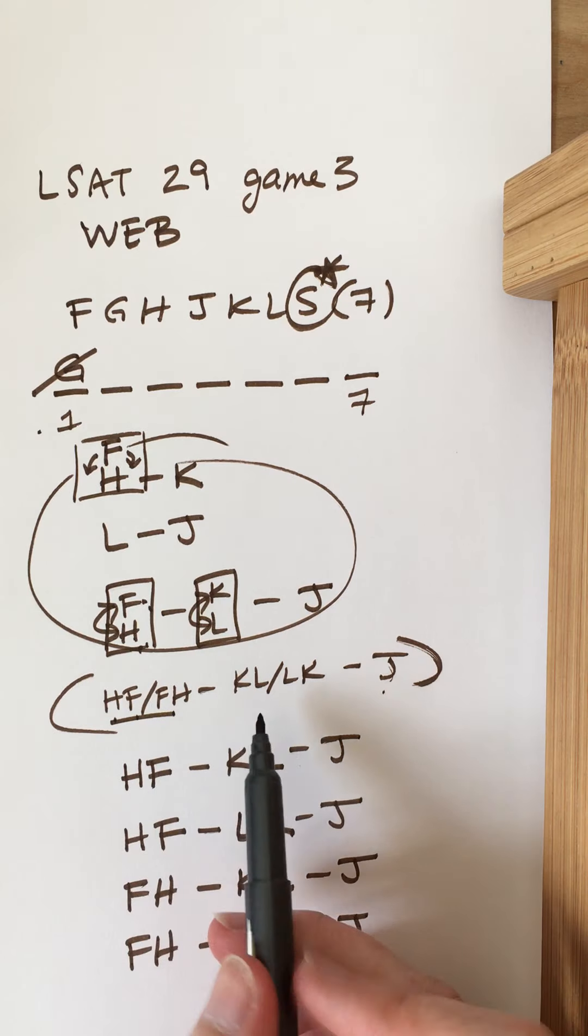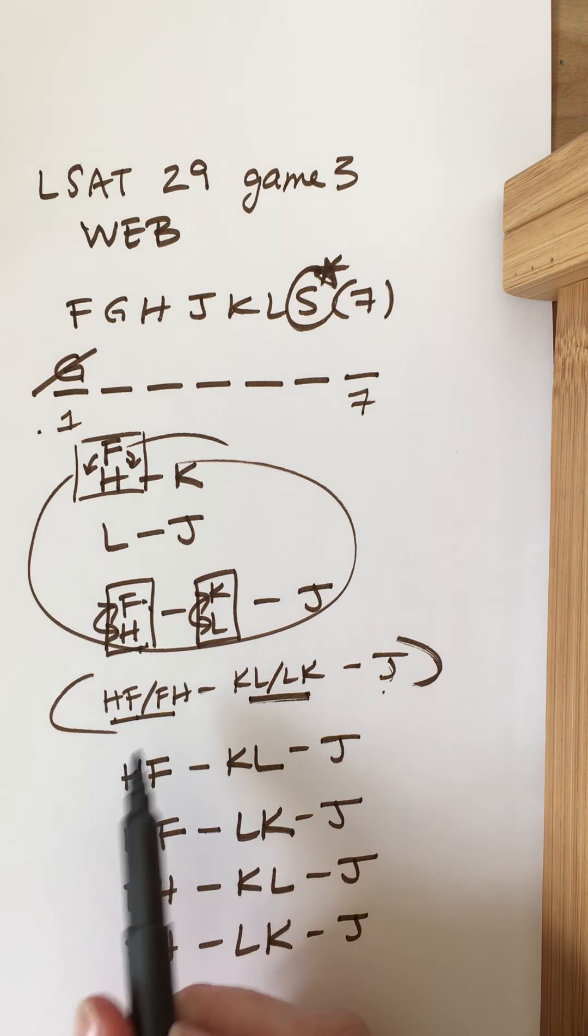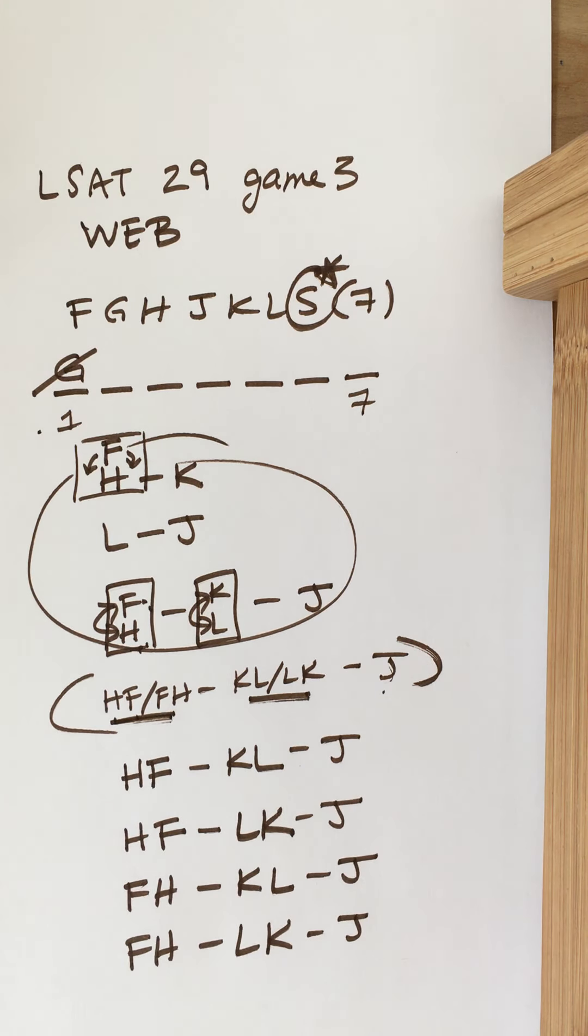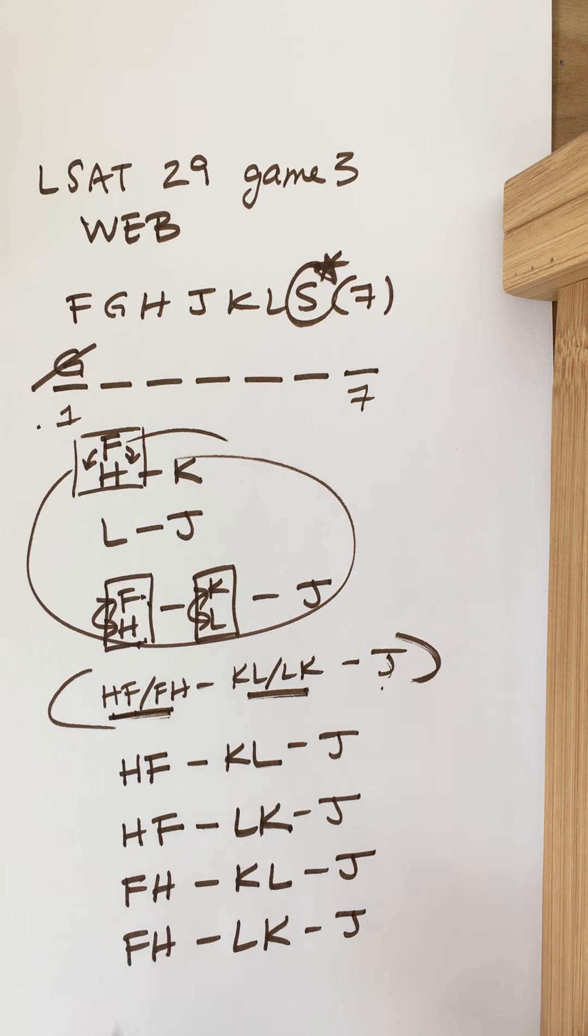So when I have two rules or two situations where I have two possibilities, I'm going to end up with four worlds there. Okay, so two to the power of two, if you remember that from maybe studying permutations at some point in math. But don't worry too much about that.